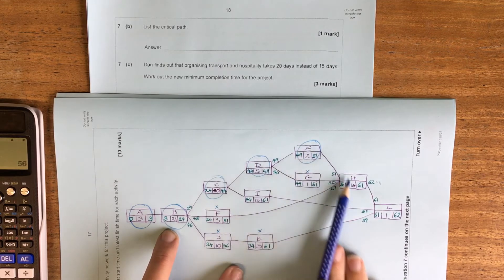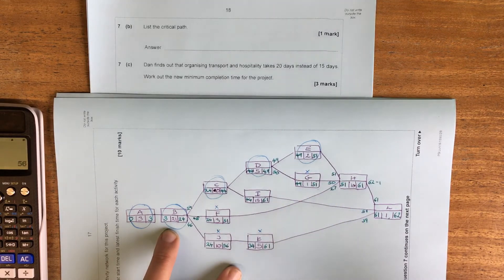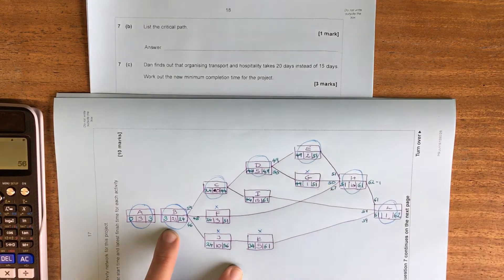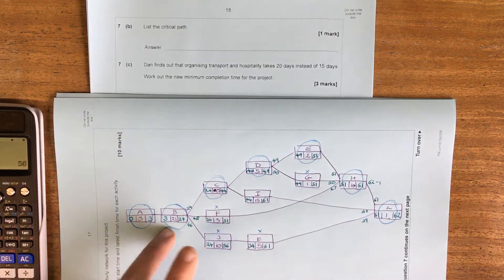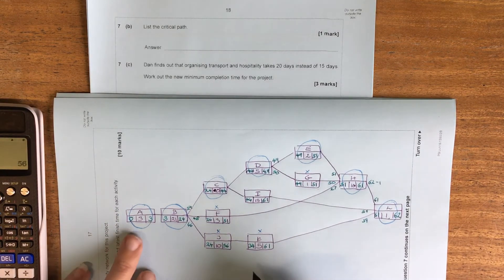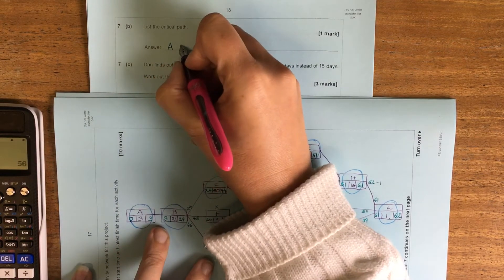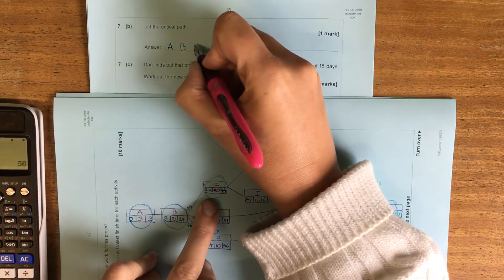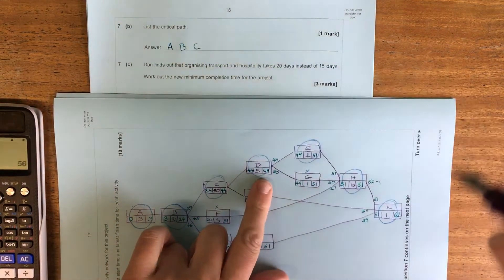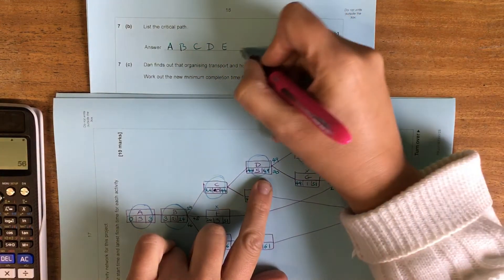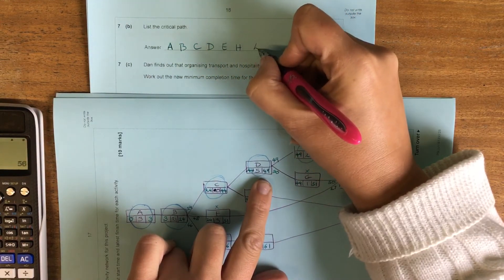If you've got a critical one, something coming out of it is going to have to be critical. So these two are also going to be critical. So our critical path goes A, B, C, D, E, H and L.